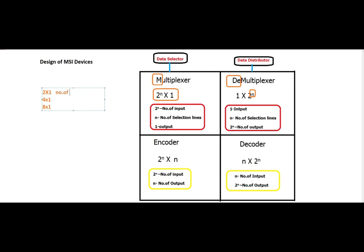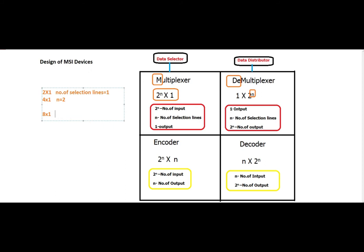In each case, the number of selection lines equals the n value we substitute. When n equals 1, there is 1 selection line; when n equals 2, there are 2 selection lines; when n equals 3, there are 3 selection lines. This is for the multiplexer.